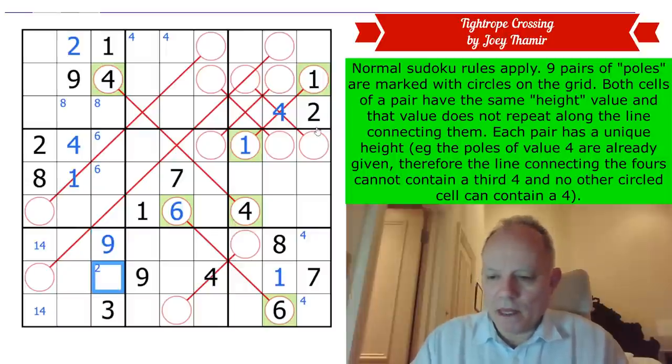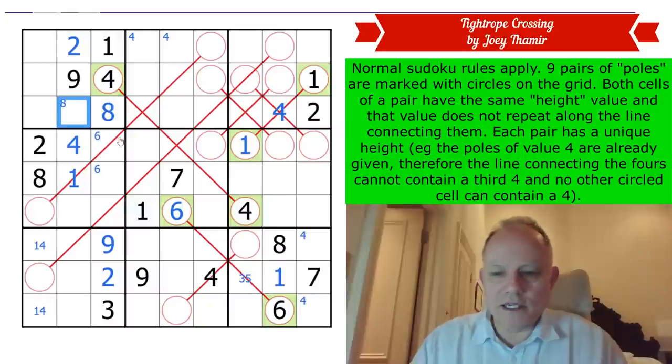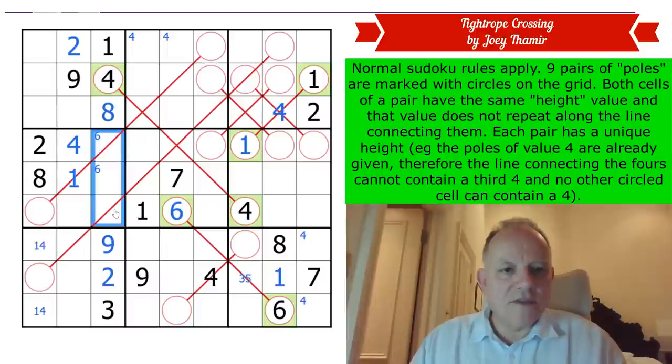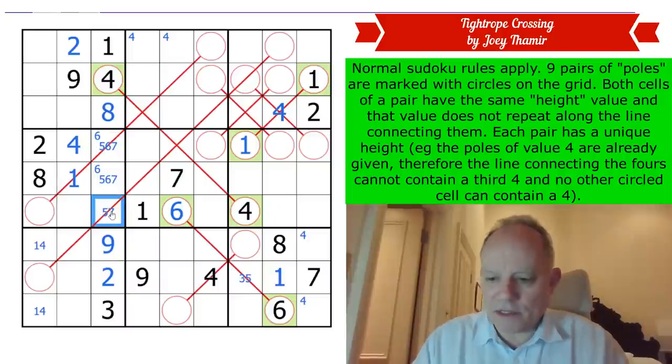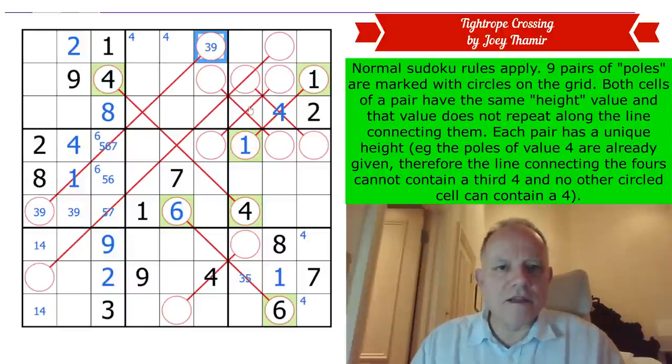Those two nines are ruling out all of those cells for nine, so we can put in a nine here and that fixes two. This is now a three or a five just by elimination. Six, I've done that. Eight in this column is very straightforward. This is now a five-seven-six triple.